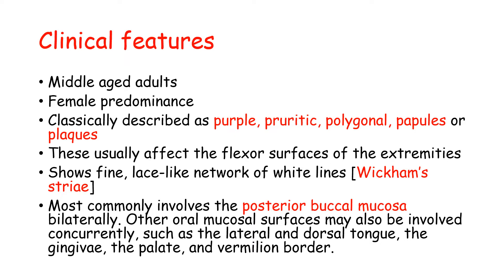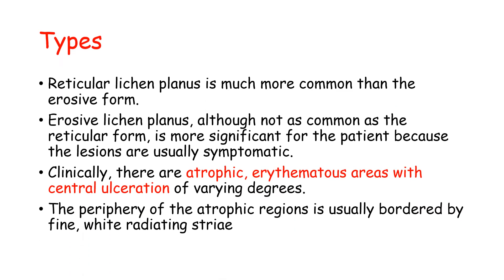Lichen planus most commonly involves the posterior buccal mucosa, usually on both sides. Other involved areas include the lateral tongue, dorsal tongue, gingiva, palate, and vermilion border. There are two types: reticular lichen planus and erosive lichen planus. Reticular is more common, but erosive is more significant for patients as it is symptomatic. In the erosive form, there are atrophic erythematous areas with central ulcerations of varying degrees, with fine white radiating Wickham's striae at the periphery.